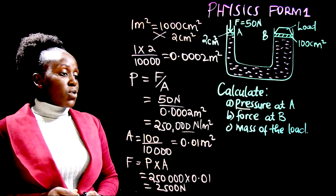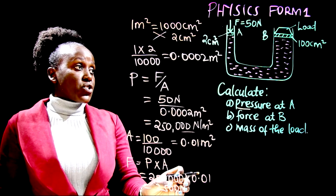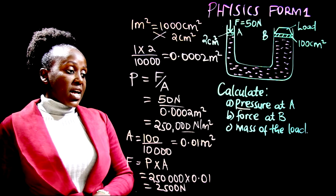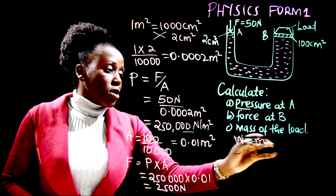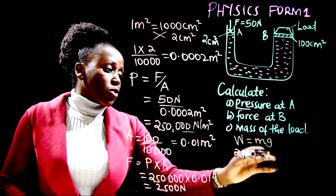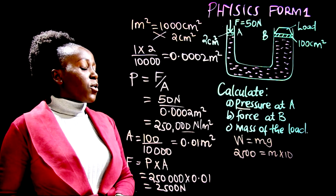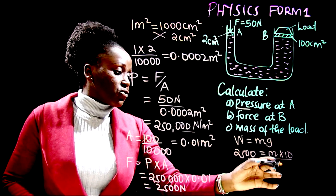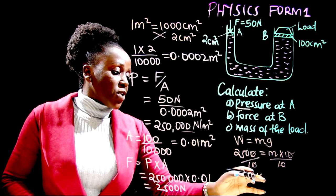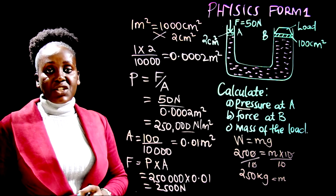After obtaining the force, we can answer part C — the mass of the load. The force at B, 2,500 newtons, represents the weight of the load. Weight equals mass times gravitational force: 2,500 equals mass times 10. Dividing both sides by 10, the mass equals 250 kilograms. So the mass of the load being raised at B is 250 kilograms.